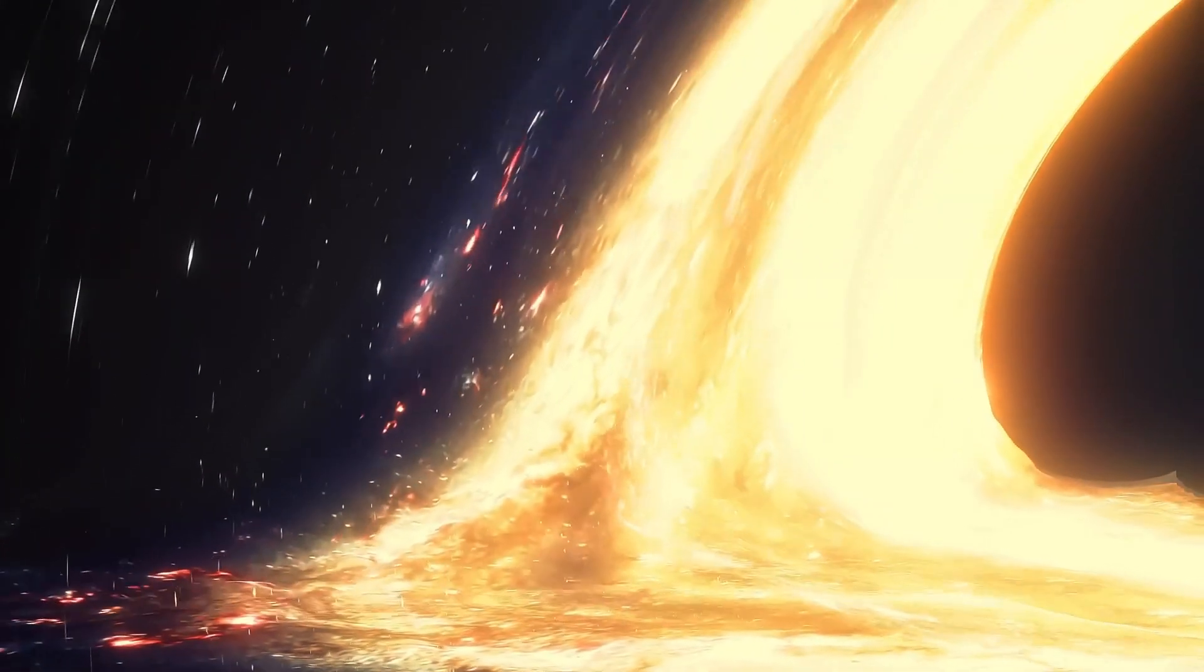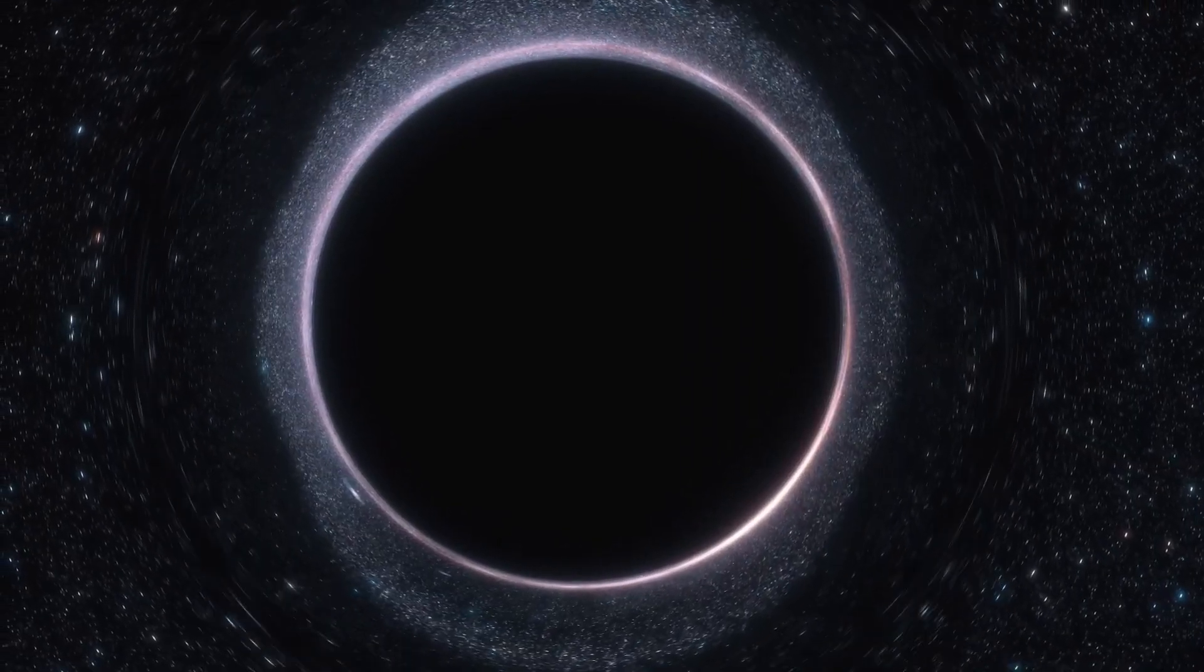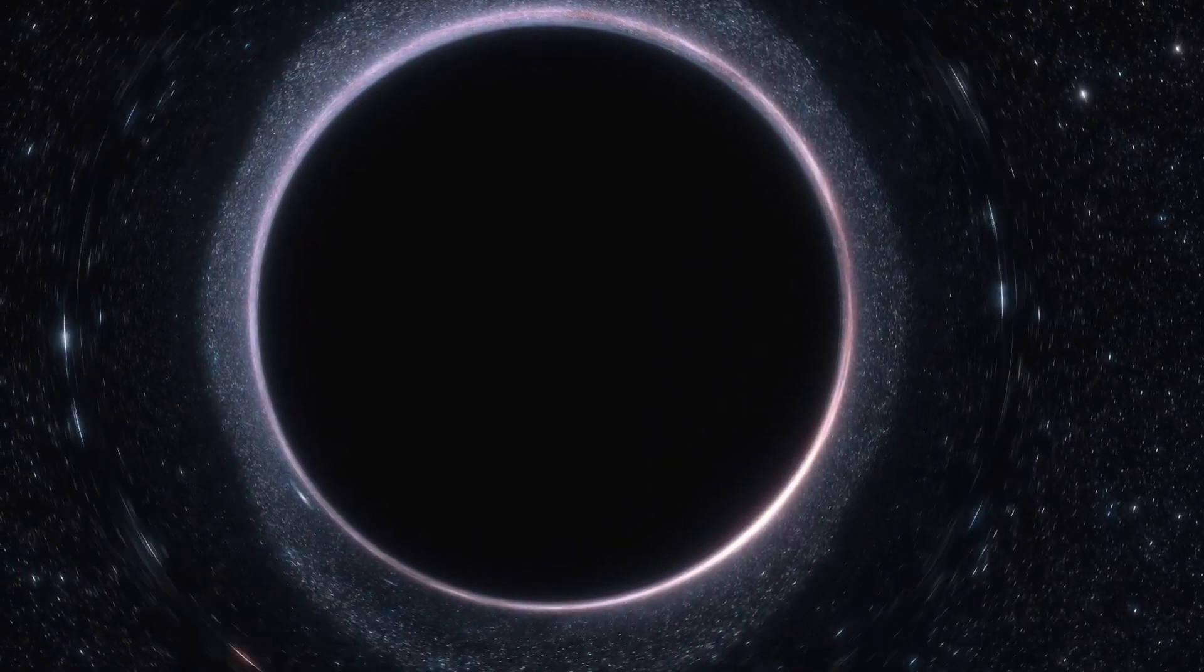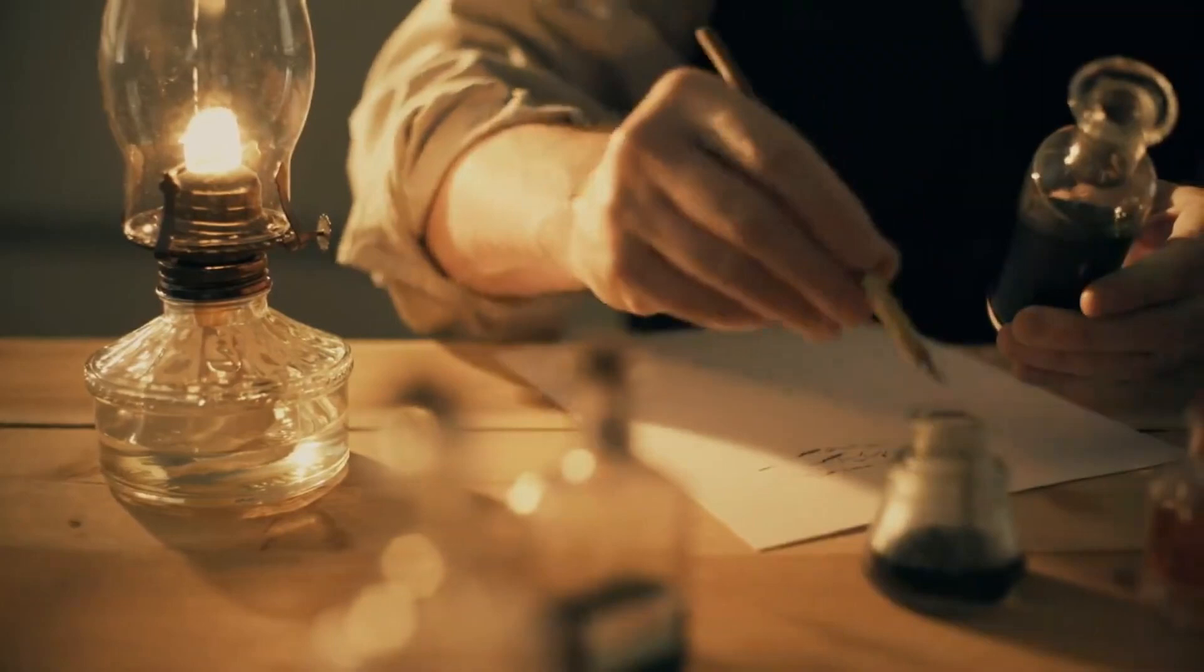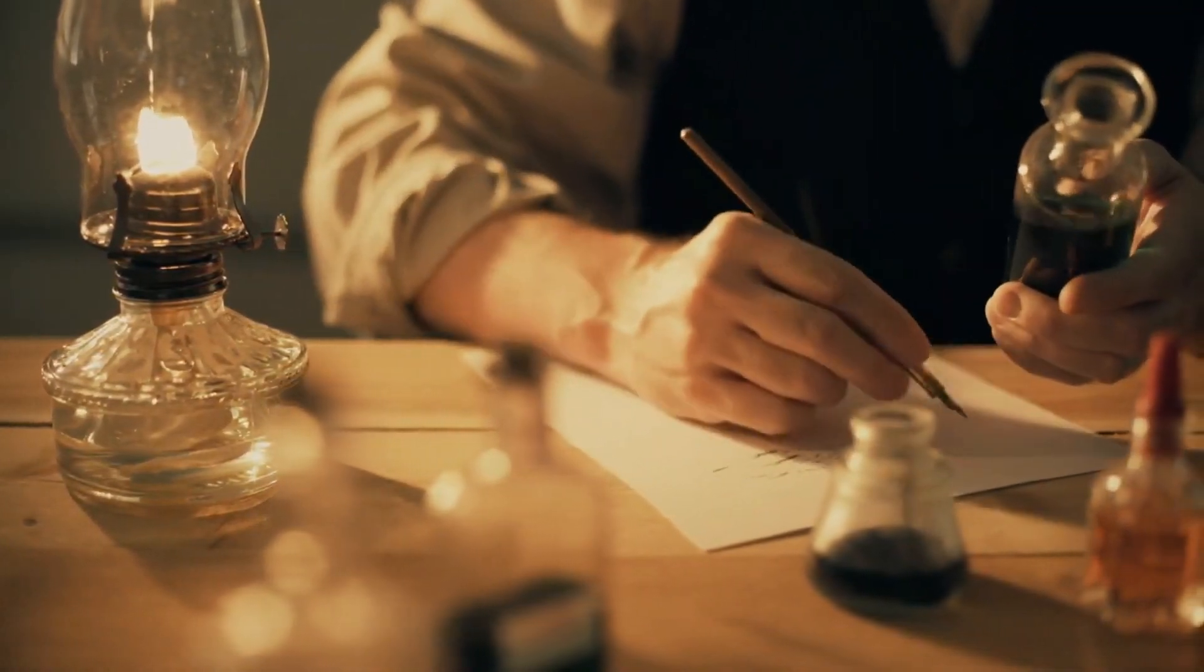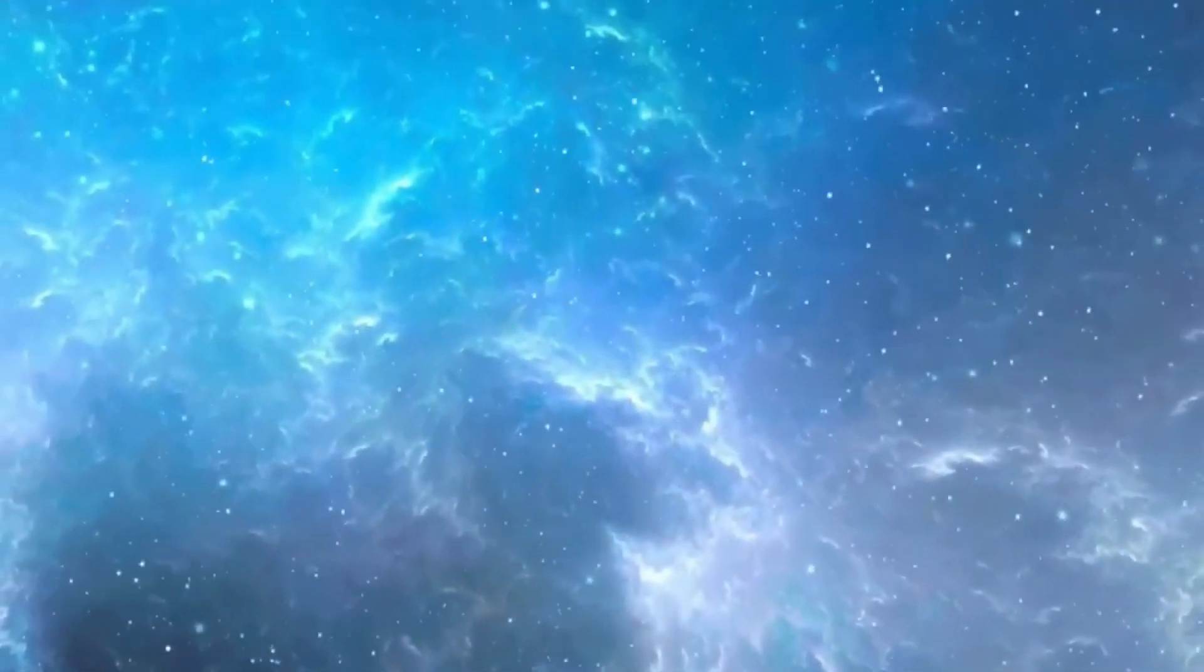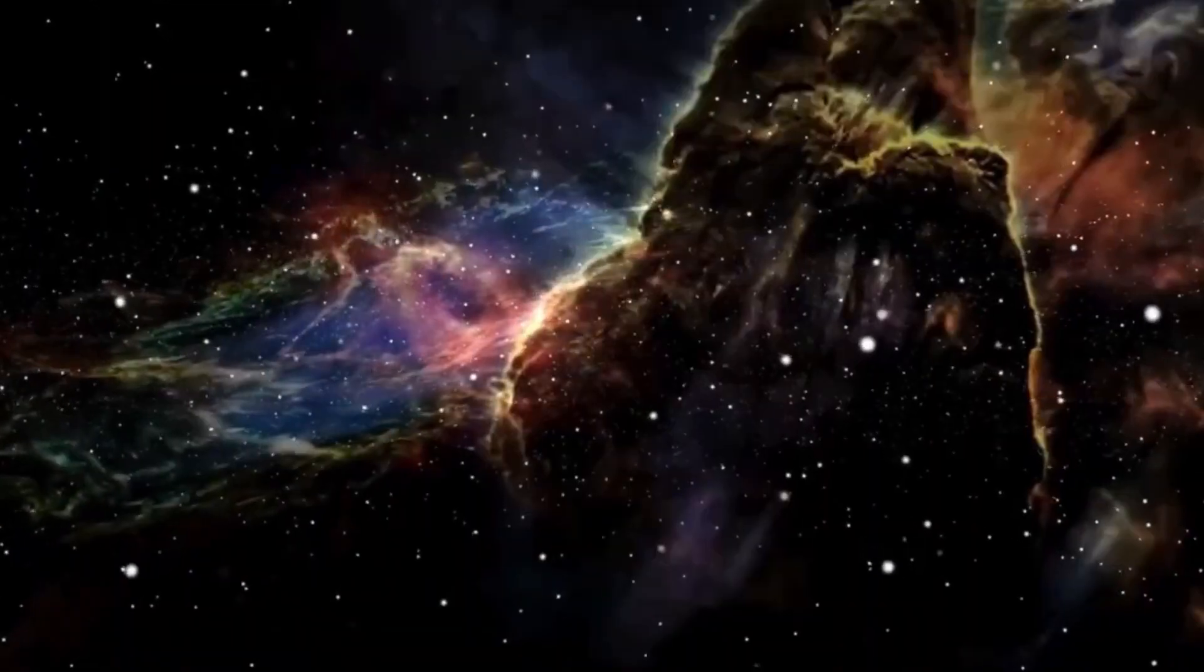According to Penrose's theorem, singularities are inevitable in general relativity. Anything that moves in space and is only experiencing effects of gravity should follow a specific path, a so-called geodesic. Basically, it's the shortest, most efficient path, both spatially and temporally.